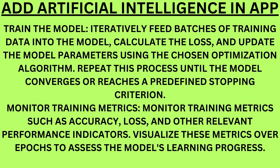Hyperparameter tuning. Fine-tune hyperparameters using the validation set. This involves adjusting parameters like learning rate, batch size, and regularization to optimize model performance. Train the model. Iteratively feed batches of training data into the model, calculate the loss, and update the model parameters using the chosen optimization algorithm. Repeat this process until the model converges or reaches a predefined stopping criterion. Monitor training metrics such as accuracy, loss, and other relevant performance indicators.